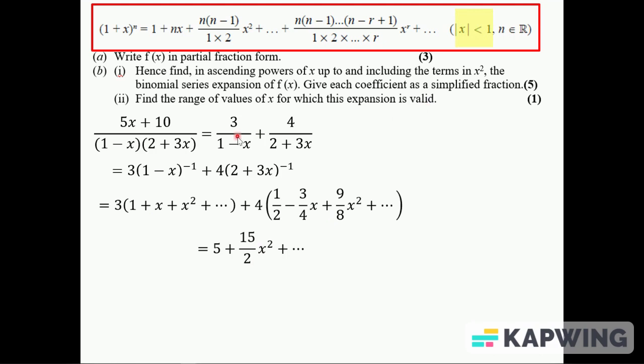The last part is the range of values for which this is valid. There's a set of values that works for both of these binomial expansions. For the one in the formula book, that x needs to be between 1 and minus 1, so the modulus is less than 1.